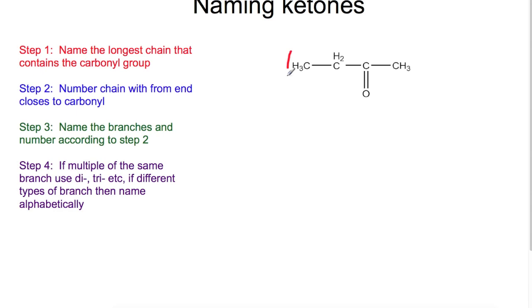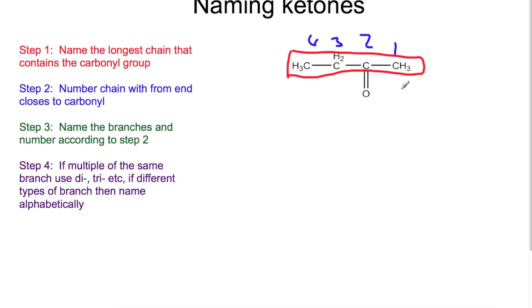For ketones, we do the same thing — find the longest chain which has the carbonyl group. However, this time we would need to number our chain: one, two, three, four, trying to get the lowest number for the carbonyl. If you had any branches, you would name those as before. So again we start with 'butan'. For this one we don't need to include the number because it would be a symmetrical molecule, but usually if it was slightly larger you would have to. And for a ketone it ends in 'one', so we have butanone.